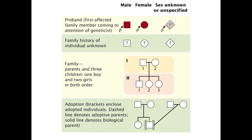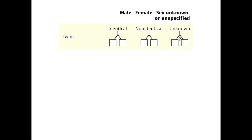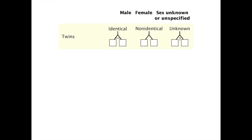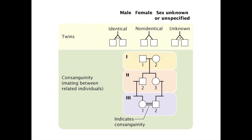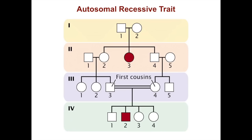In cases of adoption, you have brackets around the adopted individual, and a dashed line denotes the adopted parents; solid lines denote biological parents. For twins, there is a special symbol. For identical twins, you have a line in between the connecting lines. If they're non-identical, it's just two lines. If it's unknown whether the twins are identical or non-identical, there's a question mark. Consanguinity, which is mating between related individuals, is indicated by two lines — so two closely related people, in this case two siblings, married each other.